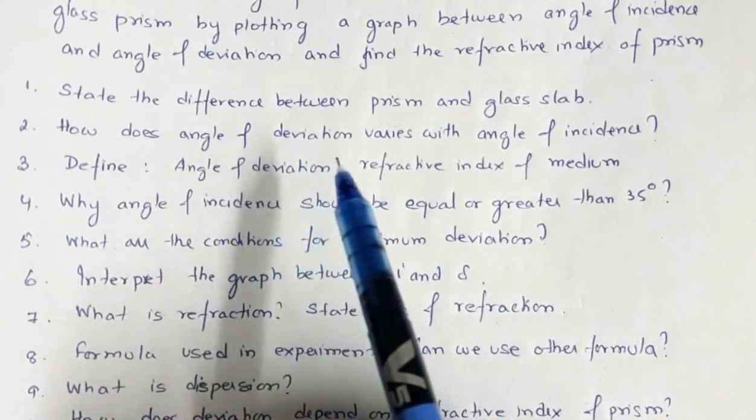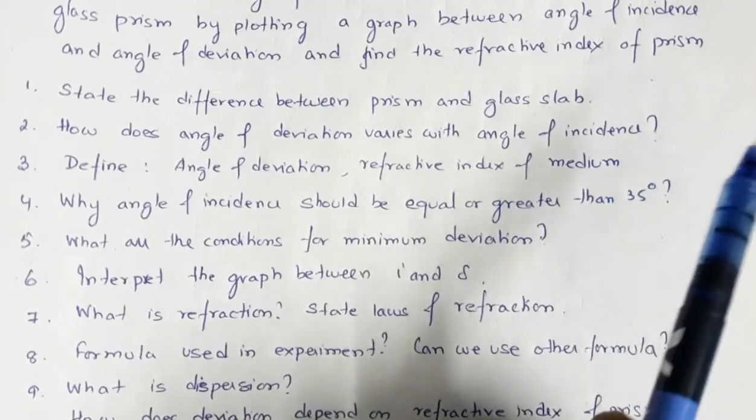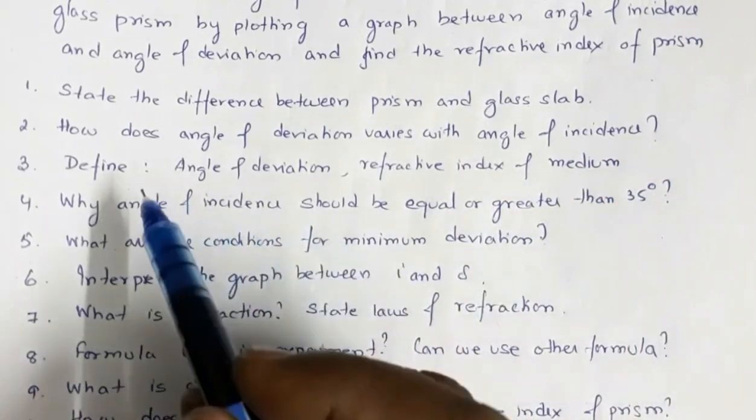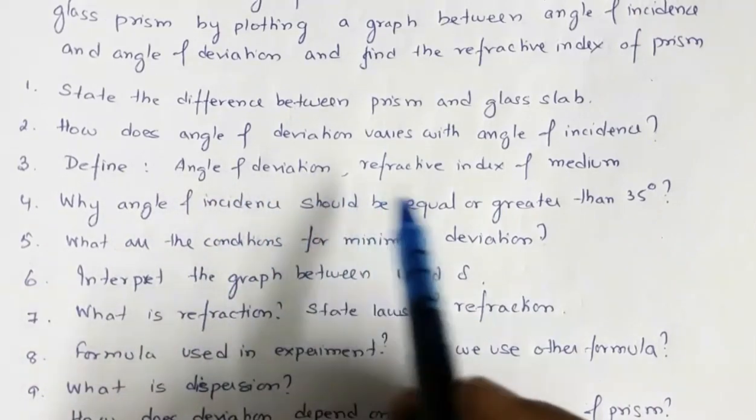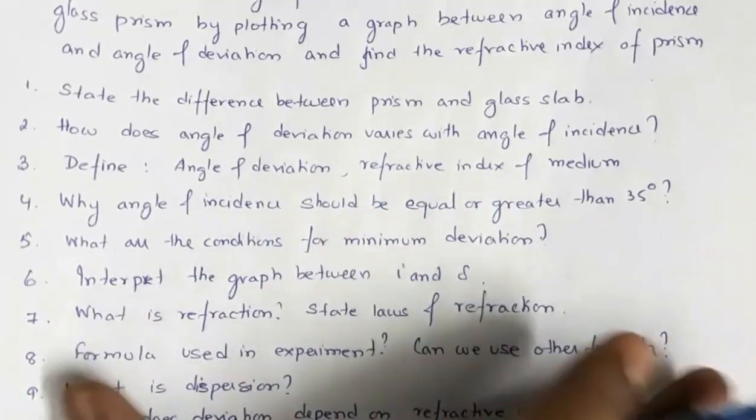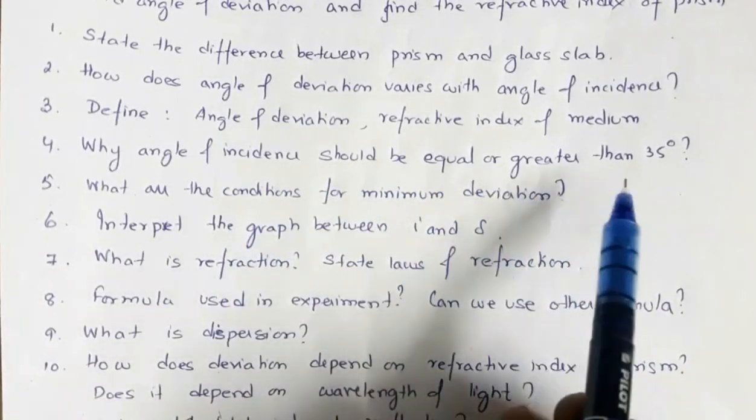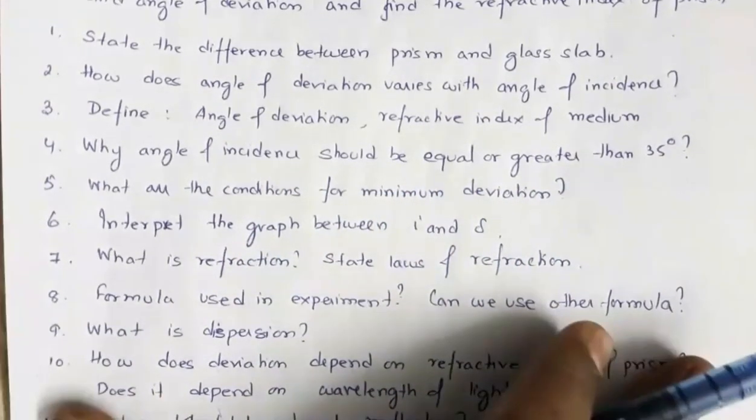How does angle of deviation varies with angle of incidence? That is a relation i plus e is equal to a plus delta, from that you can say. Define angle of deviation, refractive index for the medium. Why angle of incidence should be equal or greater than 35 degree? That is to avoid total internal reflection.